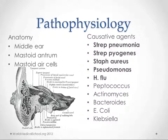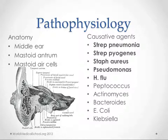We'll talk about the anatomy in a second, how the middle ear is connected to the mastoid area. The causative agents are usually some of the same ones that cause acute otitis media, but also Pseudomonas, which you don't see as much in acute otitis media. Staph aureus and Strep pyogenes are also there, along with some anaerobes and gram negatives, though those are a lot less common.